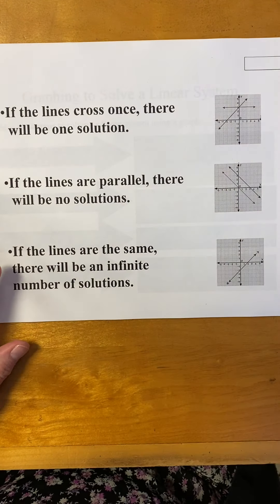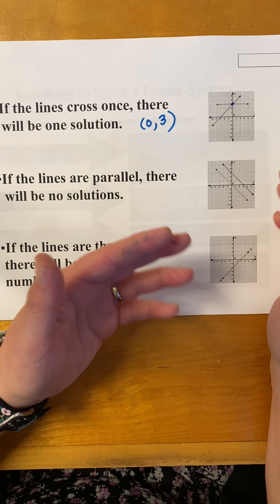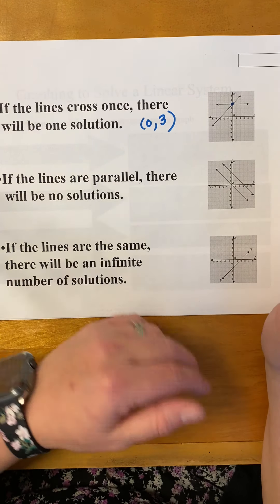Now, if the lines are parallel, then there isn't a solution because we're looking for a point that they have in common. If the lines are parallel, well, by definition, parallel lines never intersect. So they can't possibly have a solution because they don't share any points. If they're parallel — no solution. Get that in your brain: parallel lines, linear system, no solutions.